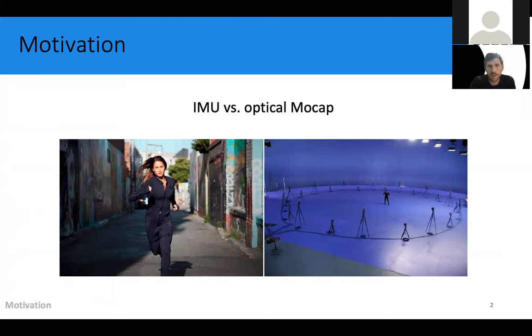So an IMU suit like Rococo SmartSuit Pro is available for under $3,000, which is a pretty sharp contrast to the more traditional optical setups, which easily cost in the tens of thousands of dollars.